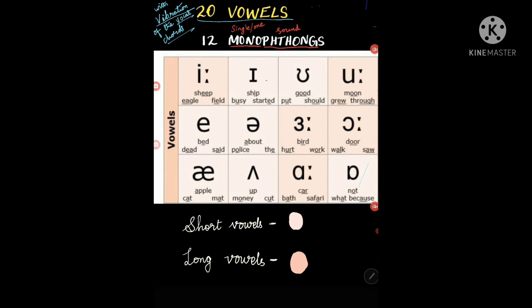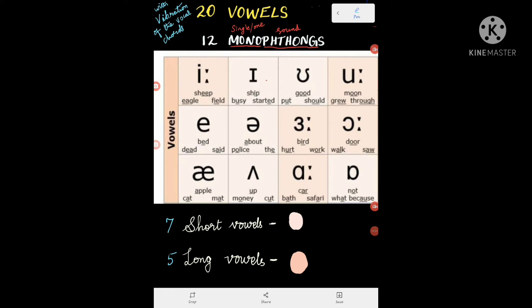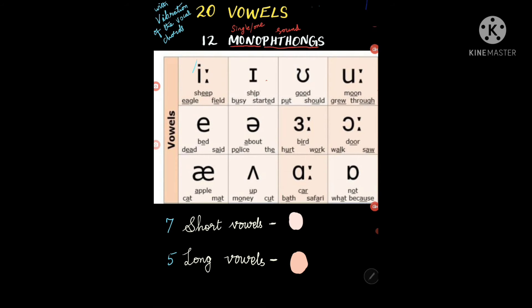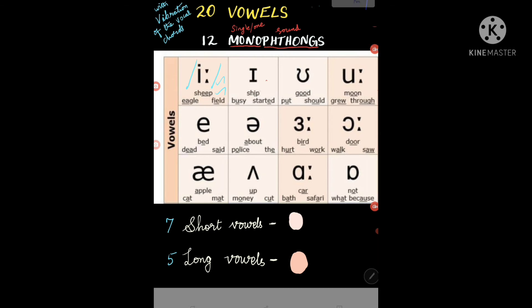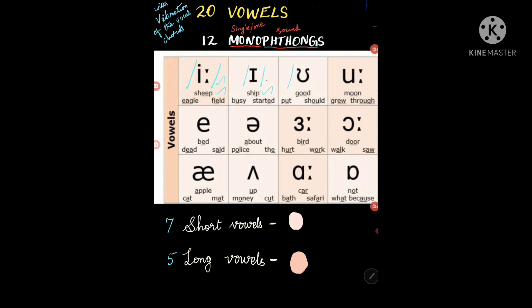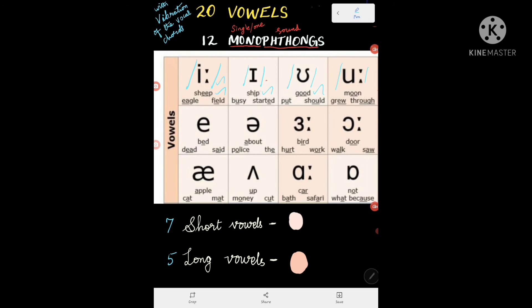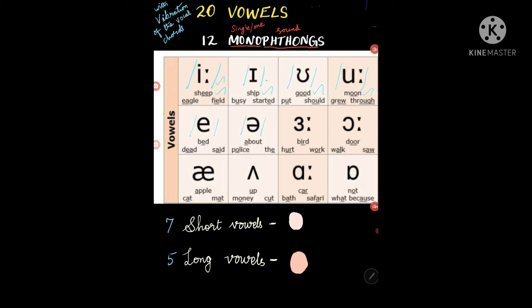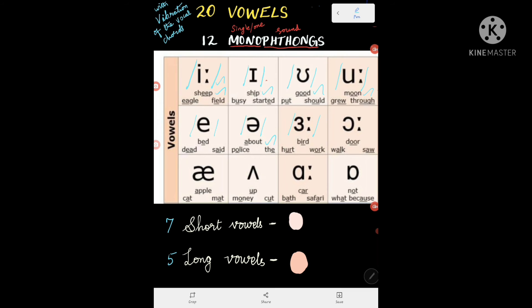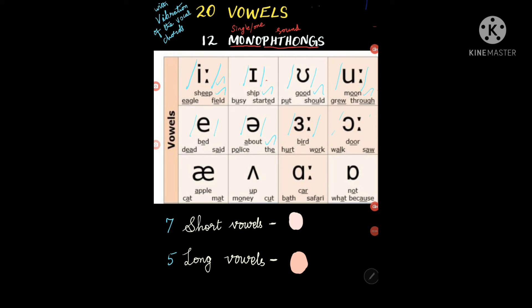Now let us start pronouncing these long and short vowels. Listen carefully: i, i sheep; i, i ship; o, o good; e, e boat; u, u bird; o, o door.